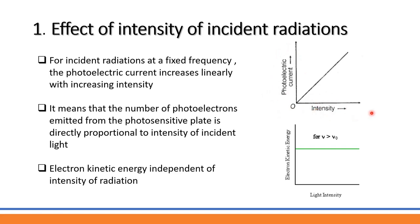When intensity increases, more electrons are ejected from the emitter plate and collected at the collector plate, increasing the photoelectric current. The number of photoelectrons emitted from the photosensitive plate is directly proportional to the intensity of incident light.